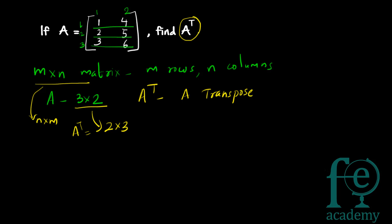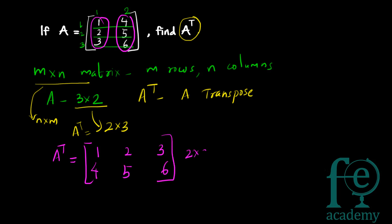It is very simple — you just have to write the columns as rows and rows as columns. Here the first column is 1, 2, 3, so for A transpose your first row will be 1, 2, 3. The second column is 4, 5, 6, and the second column is to be written as the second row. So your second row of A transpose will be 4, 5, 6. Here you can see it is a 2 cross 3 matrix. A transpose of any matrix can be obtained by interchanging the rows and columns.